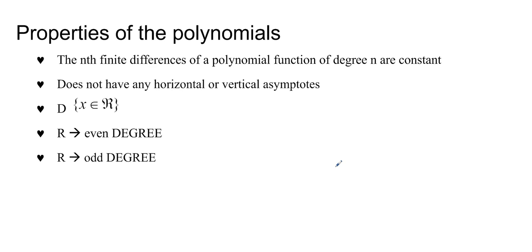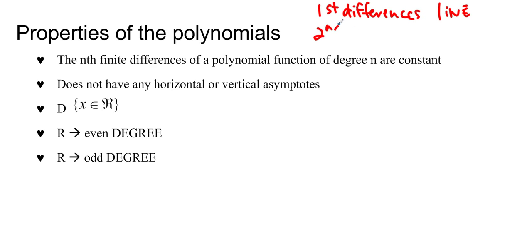Here are some other properties of polynomials. The nth finite differences of a polynomial function of degree n are constant. So if the first differences are the same, it must be a line. If the second differences are the same, it's a quadratic. If the third differences are the same, it's a cubic. If the fourth differences are the same, it's a quartic. Fifth differences means quintic, and so forth. We call them the finite differences because we can have first, second, third, fourth, etc.